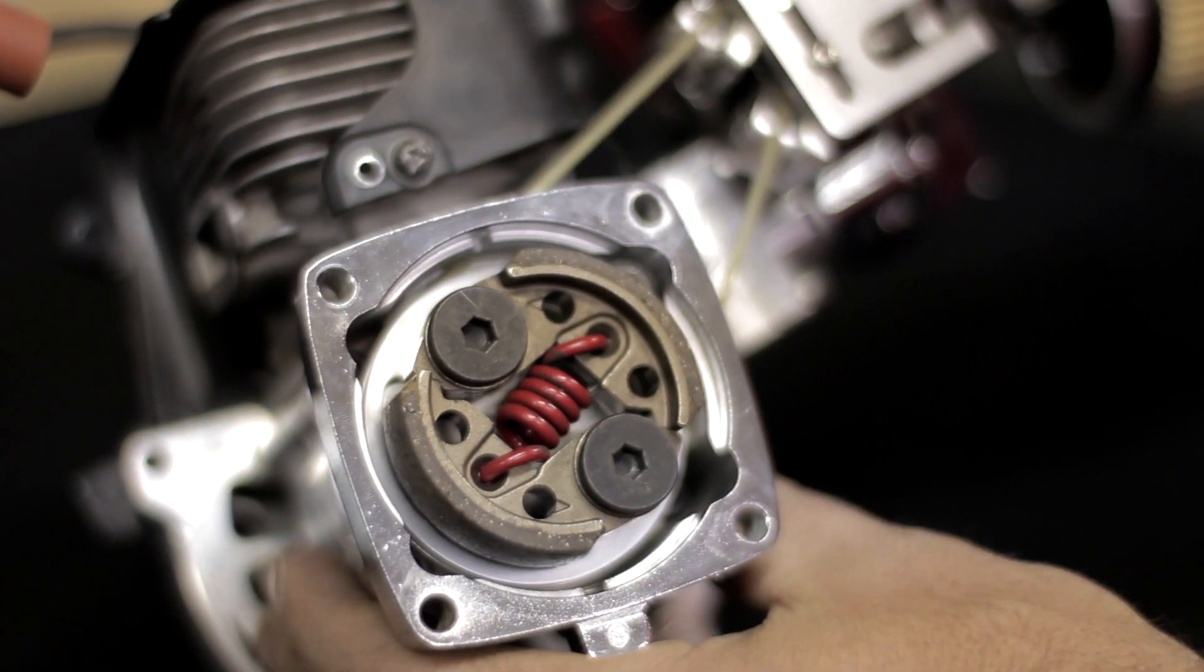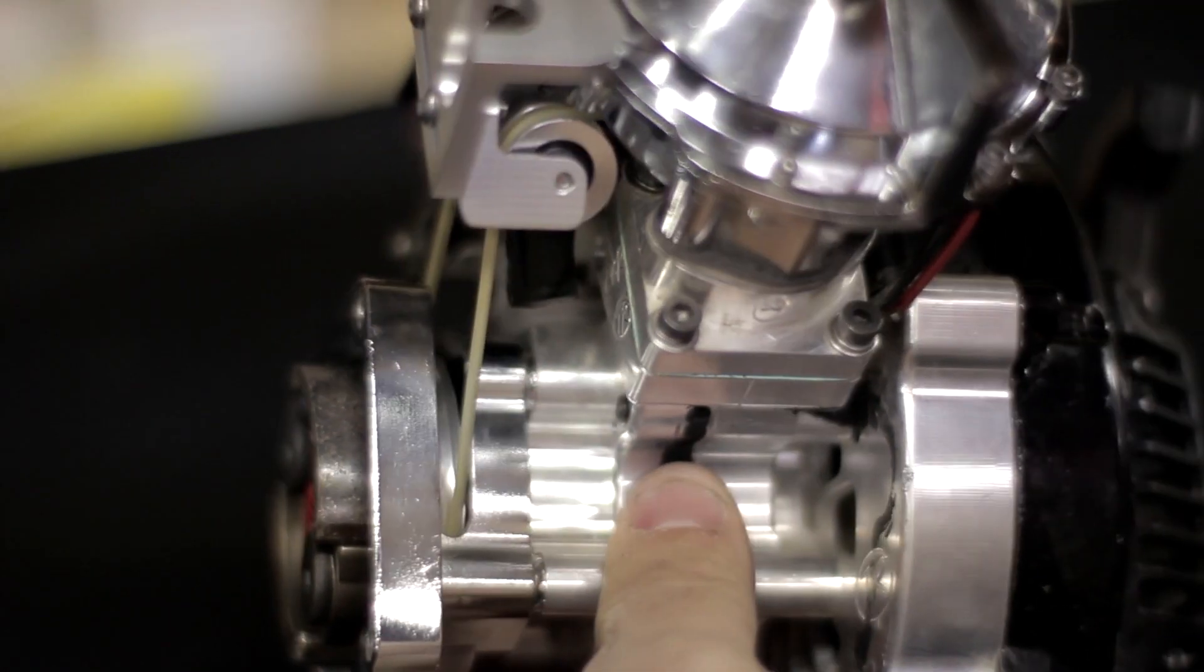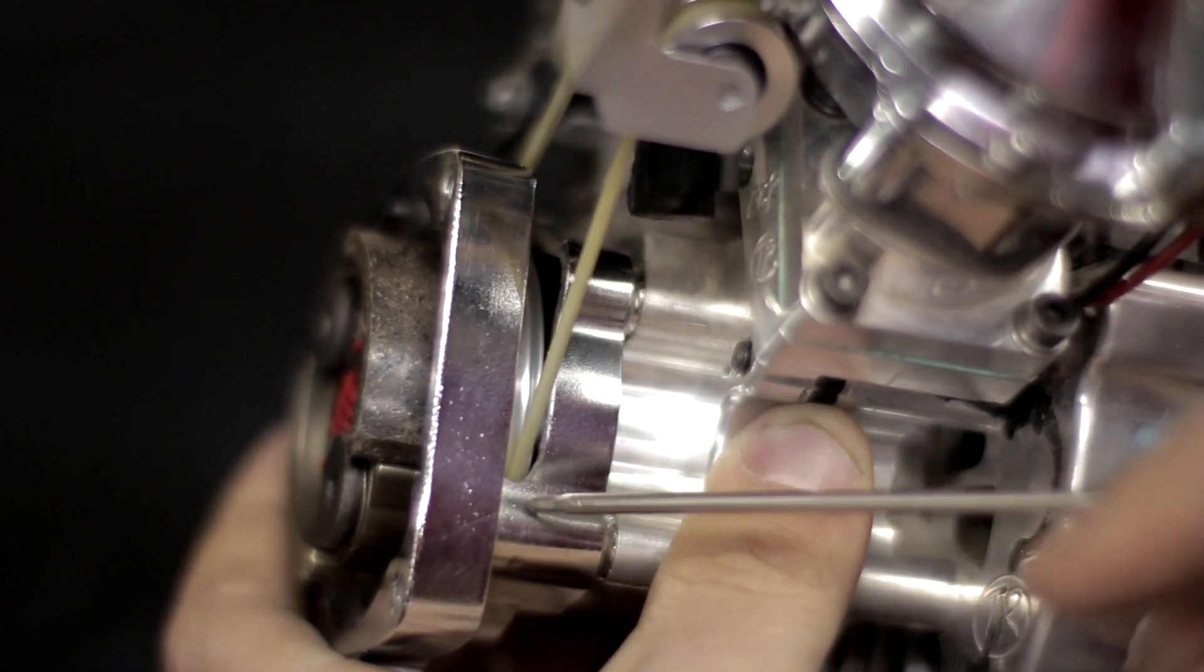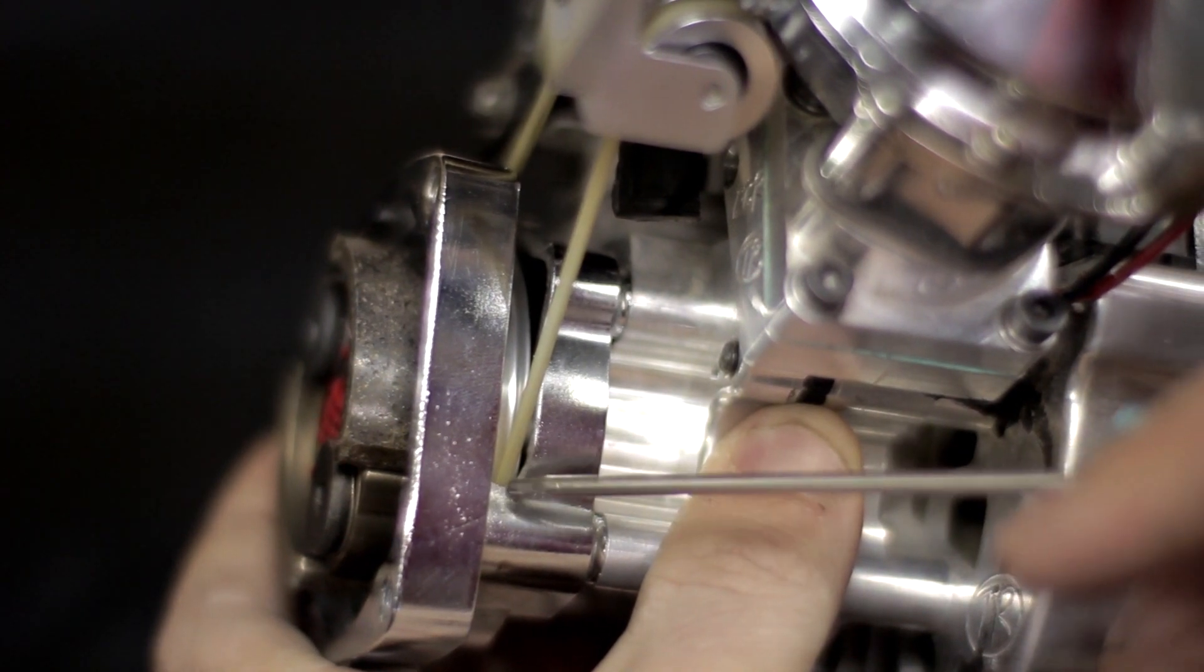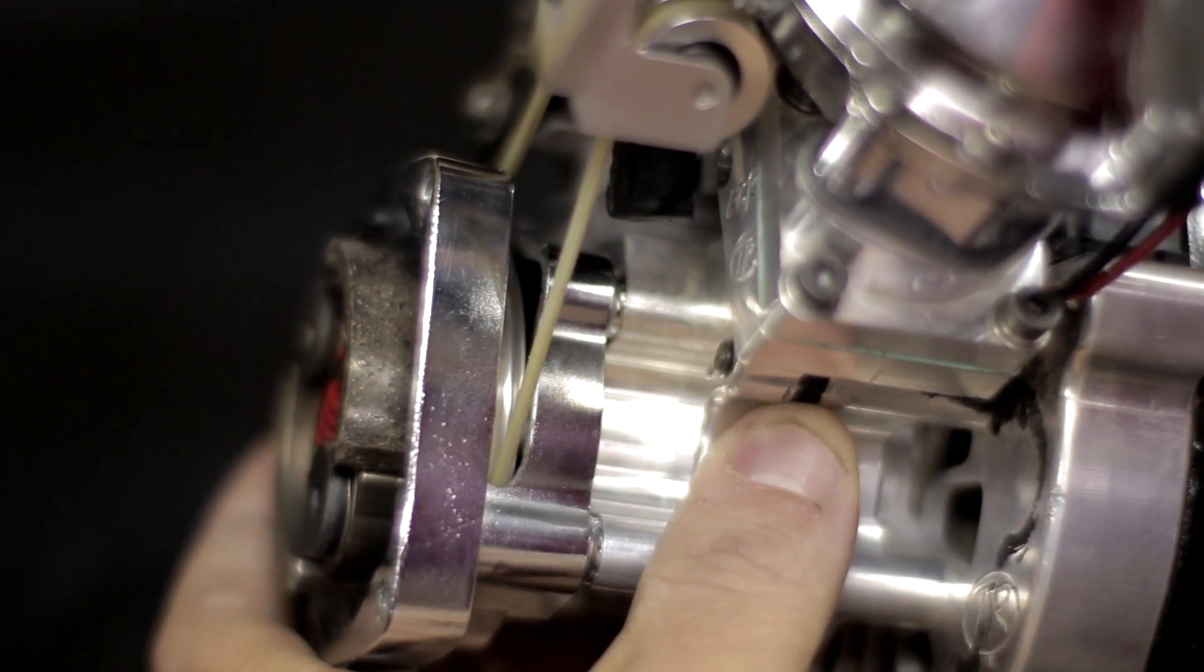In this process you might also notice the clutch housing might need to be modified. You want to make sure you have proper clearance between the belt and the pass-through on the clutch housing.